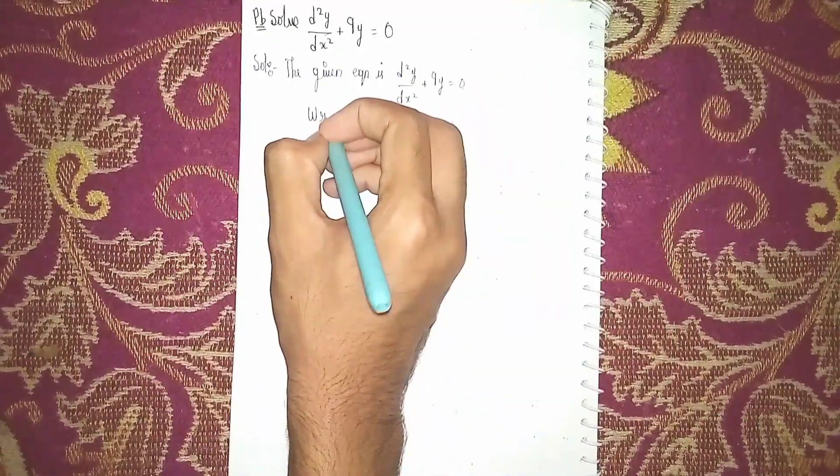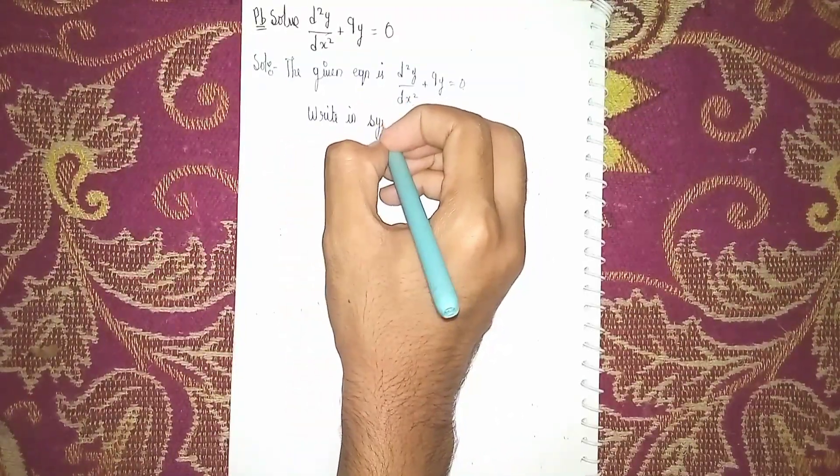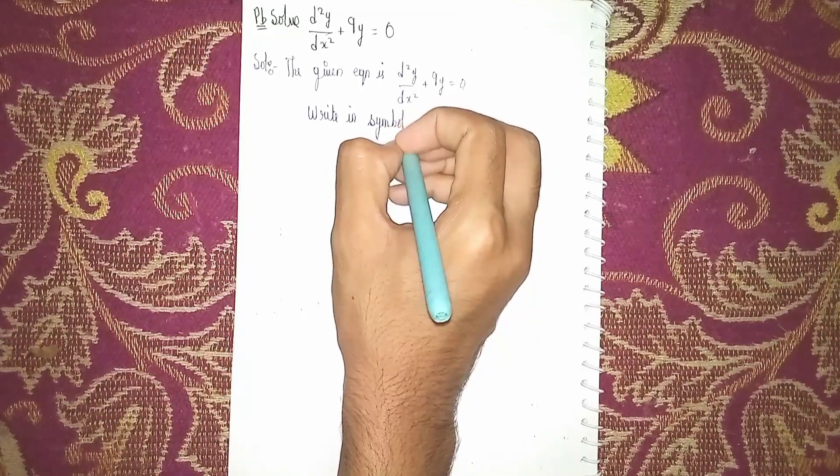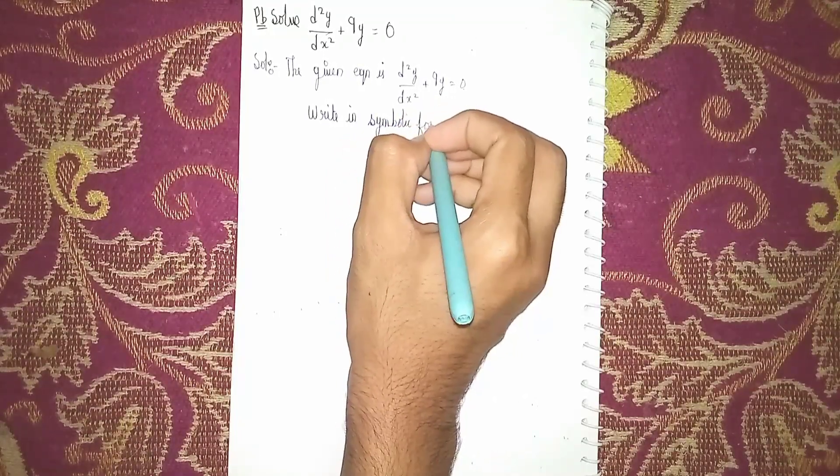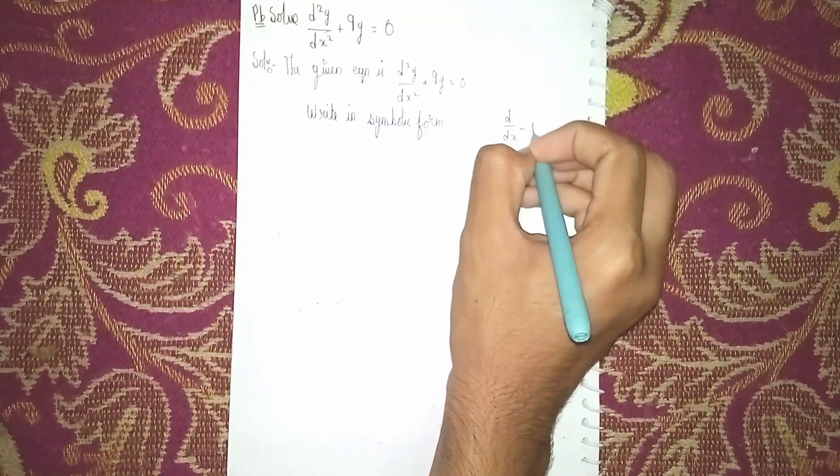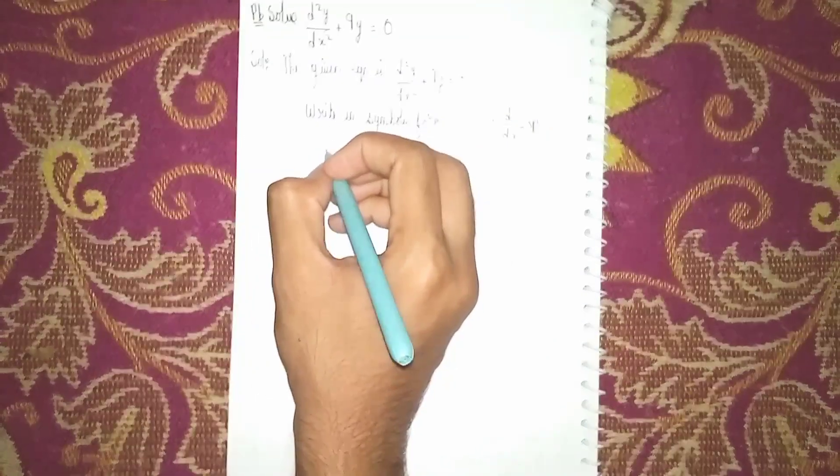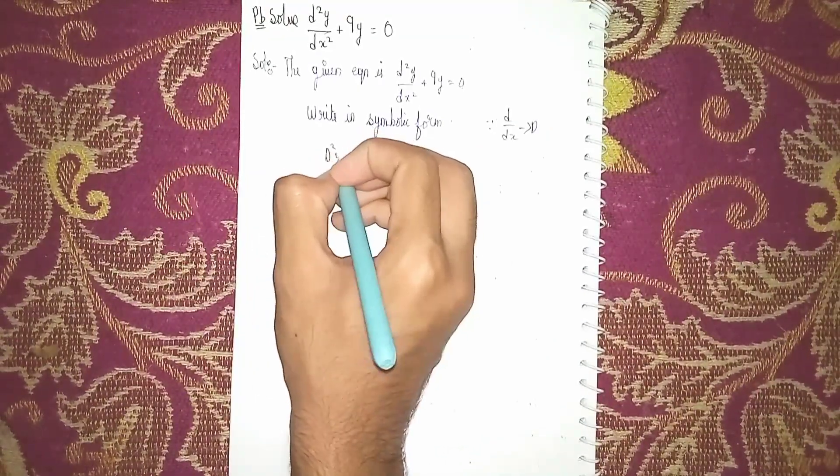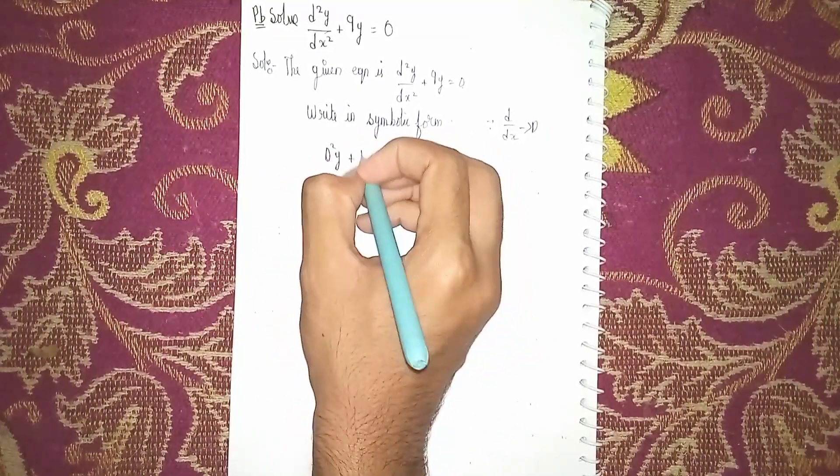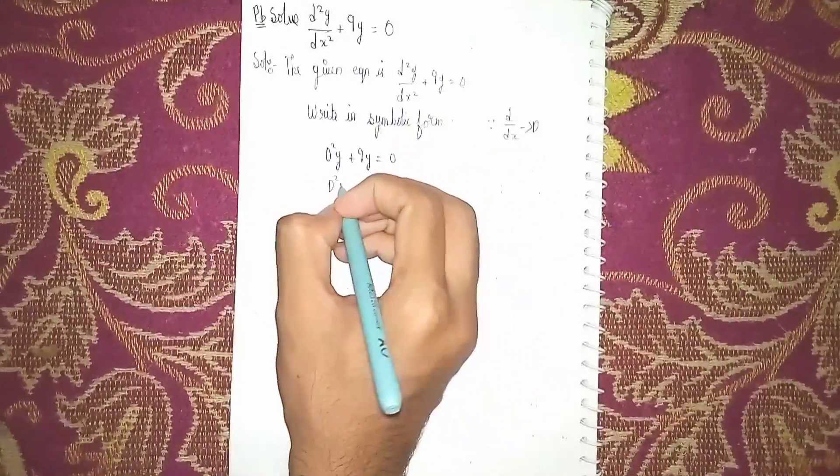Write in symbolic form. Symbolic form means instead of d/dx I put capital D. So it becomes D²y + 9y = 0. Here I can take y as common.